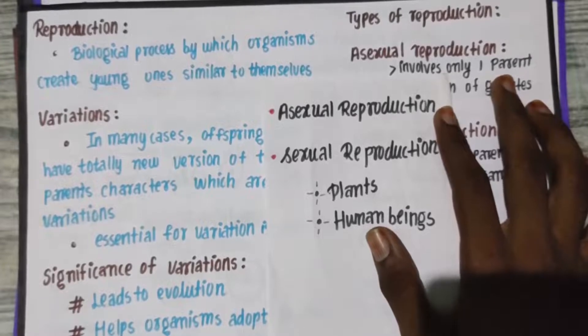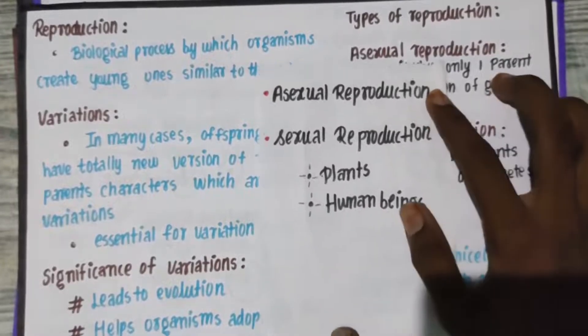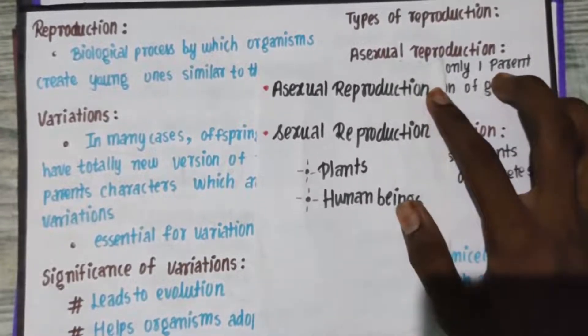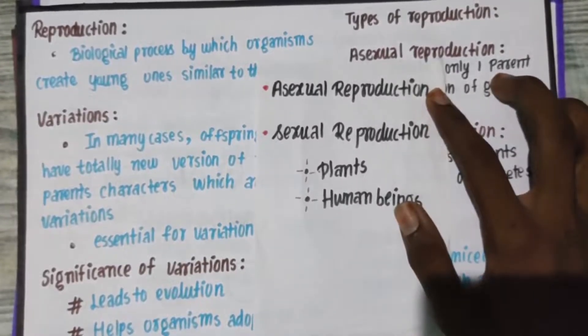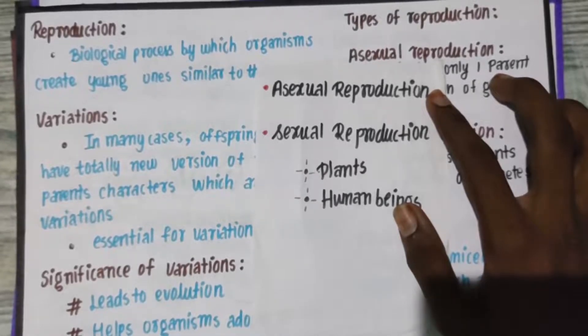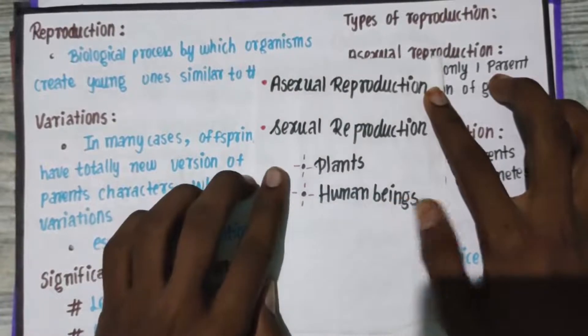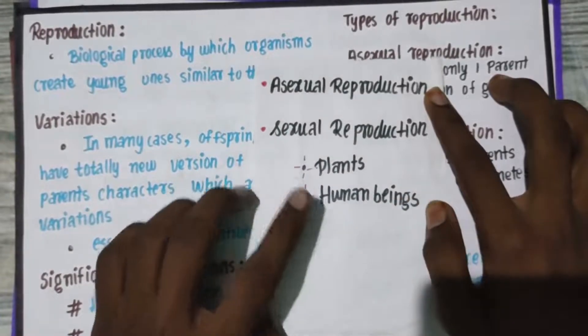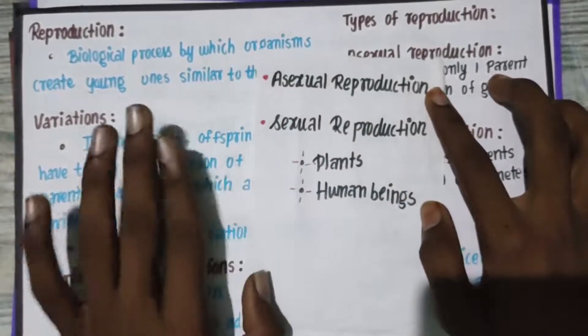Where one parent is involved, there will be asexual reproduction. Where there will be the involvement of two parents — male and female — we have sexual reproduction, in plants and human beings.